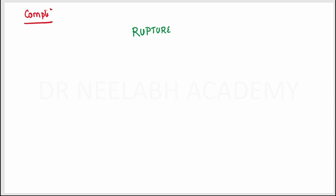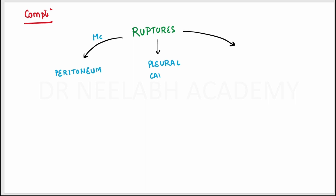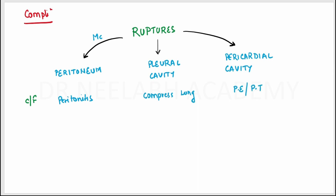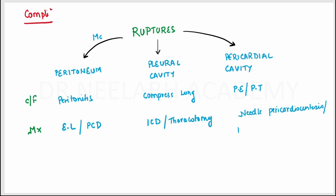Complications can include rupture of the abscess into three cavities: the peritoneal cavity, the pleural cavity, and the pericardial cavity. The most common is rupture into the peritoneal cavity. Symptoms are: peritonitis (peritoneal), compression of lungs (pleural), and pericardial effusion and tamponade (pericardial). Management: exploratory laparotomy or percutaneous drainage for peritoneal; ICD or thoracotomy for pleural; needle pericardiocentesis or pericardiotomy for pericardial.